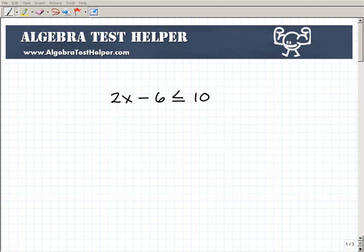Okay, another math video from AlgebraTestHelper.com, and what I'm going to do here is solve this basic linear inequality problem. So if you take a look at this problem, it's 2x minus 6 is less than or equal to 10.